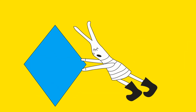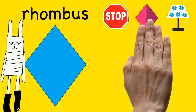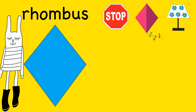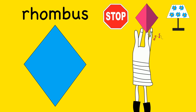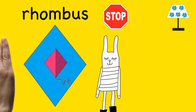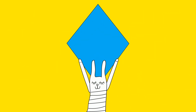I see a rhombus. Can you show us the object that is shaped like a rhombus? A kite is shaped like a rhombus. Rhombus.